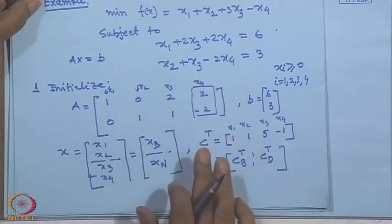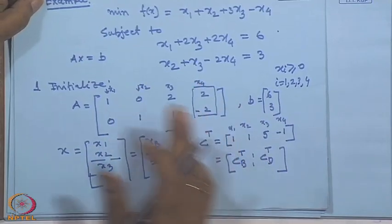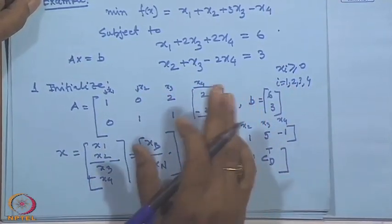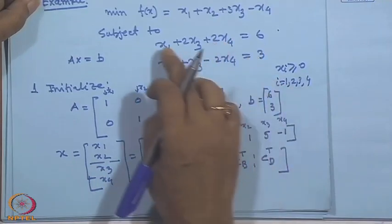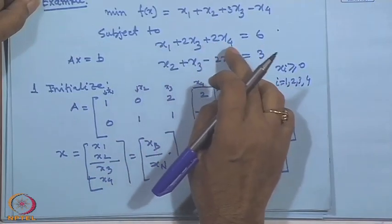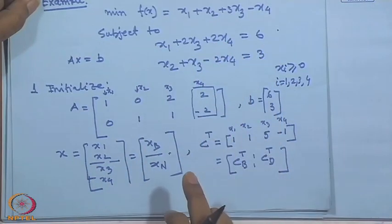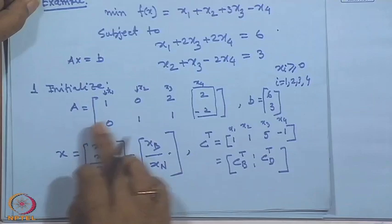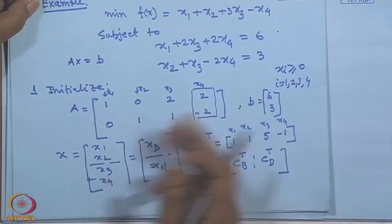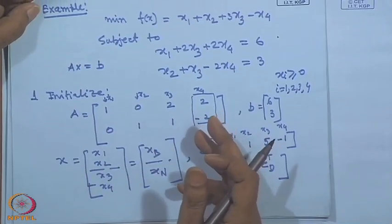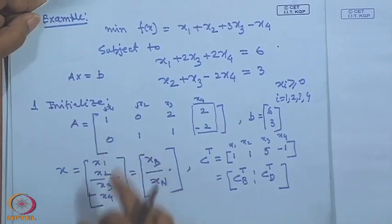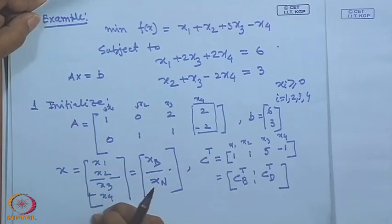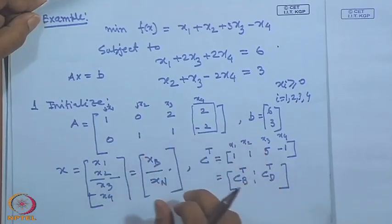Now we have variables x1, x2, x3, x4. We have to choose which are the basic variables and which are the non-basic variables. These two equations are already in canonical form, so x1 and x2 can be considered as basic variables and x3 and x4 are non-basic variables.